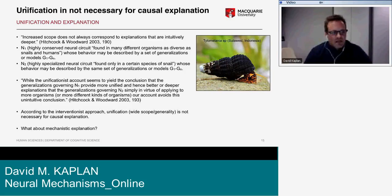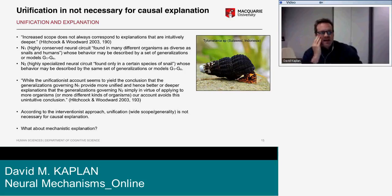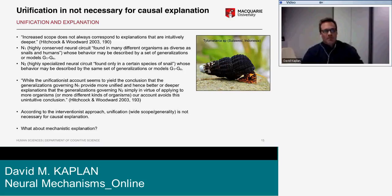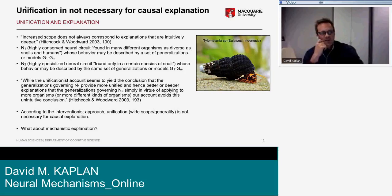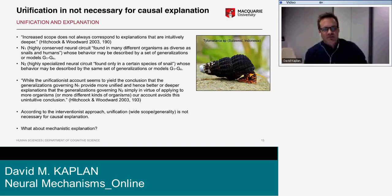First, unification is not necessary for causal explanation — an argument Hitchcock and Woodward have made several times, and that some mechanists like Craver have also endorsed. They note that 'increased scope does not always correspond to explanations that are intuitively deeper.' They give a nice example: a highly conserved neural circuit found in many organisms and a highly specialized circuit found only in a particular species of snail — both described by the same generalizations G1 through Gn.